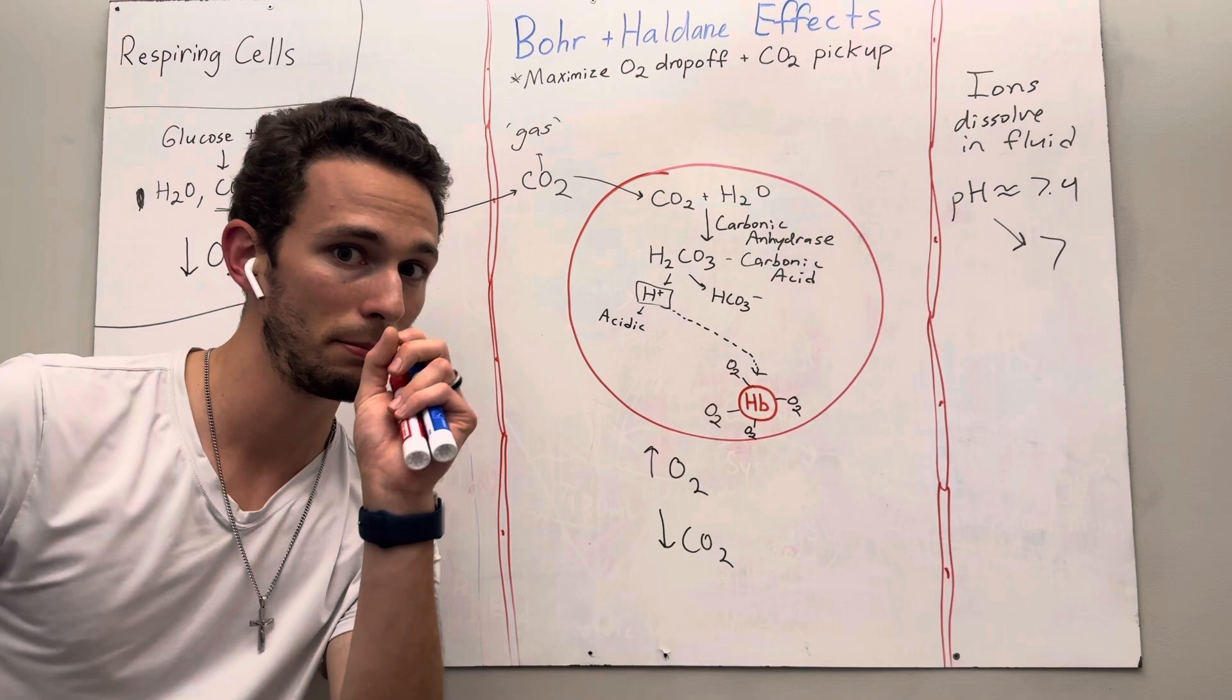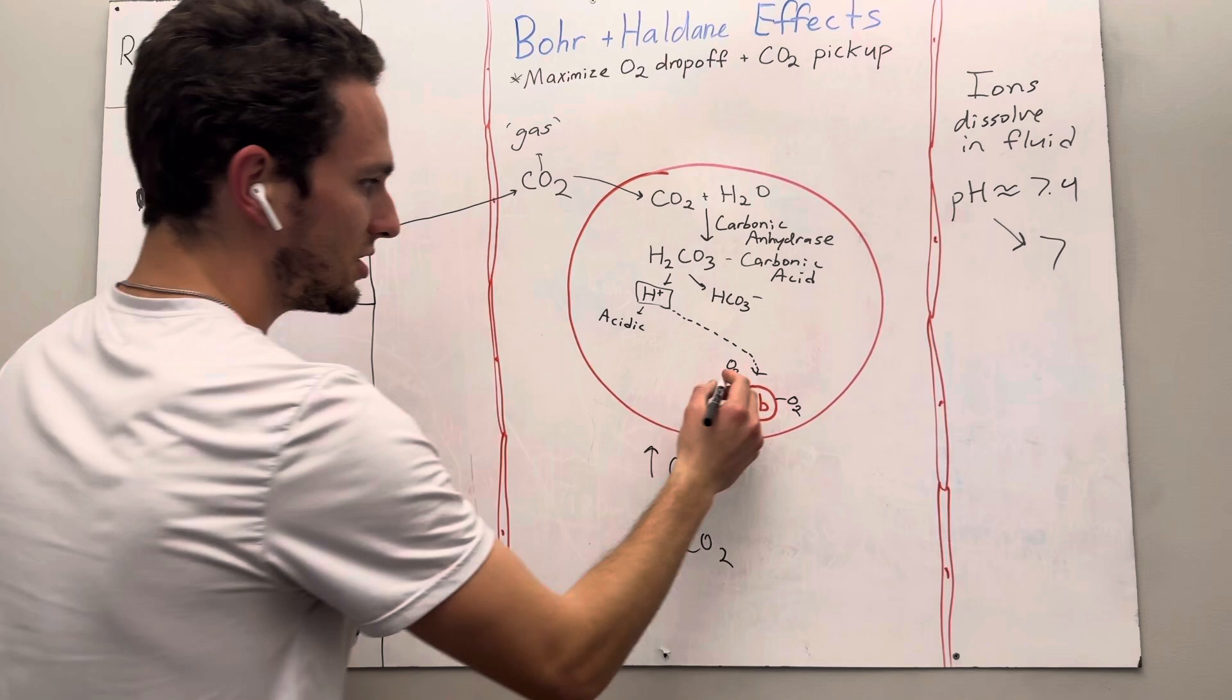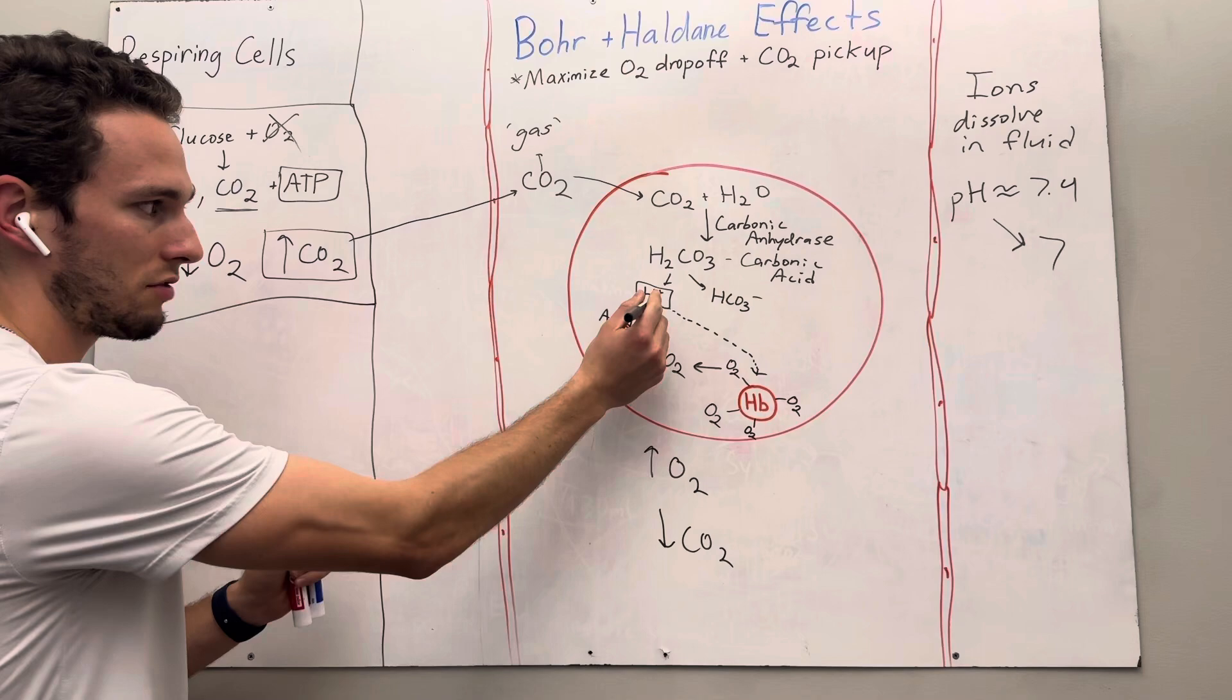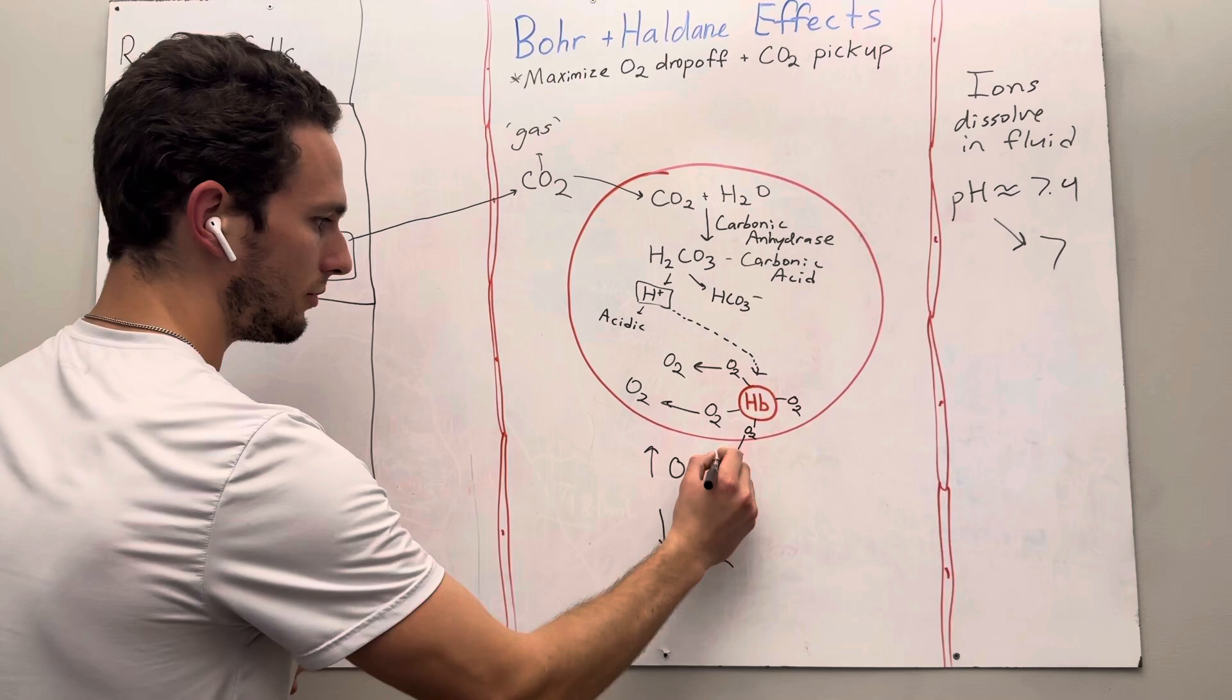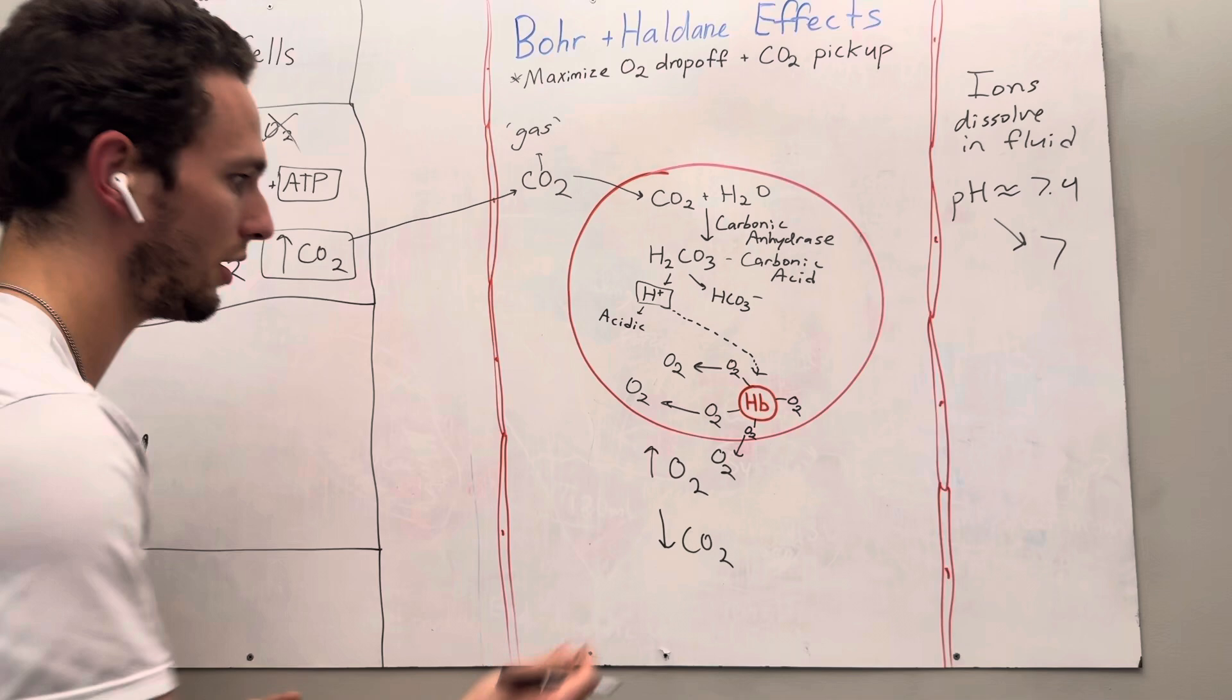And at this point, this is where the Bohr effect comes in. When hydrogen ions like to attach to hemoglobin, to basically scrub up the hydrogen ions to not make it too acidic, what it will do is it will kick off the oxygen. So now the oxygen unbinds to the hemoglobin because of those hydrogen ions. Thus, a lot of this oxygen is going to get kicked out of the hemoglobin. And what does that mean? Well, now that it's unbound to this hemoglobin protein, it can now travel freely.